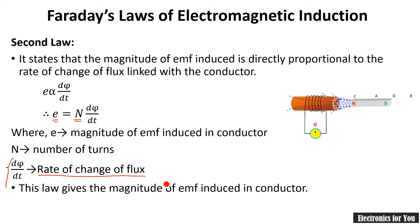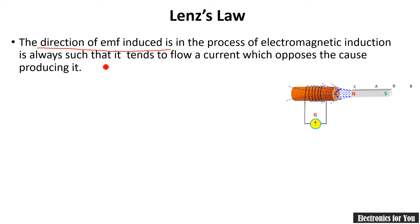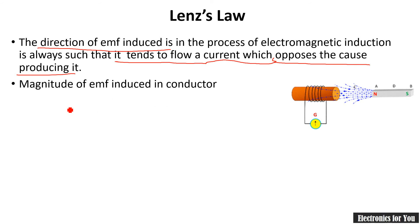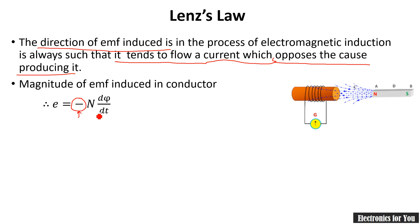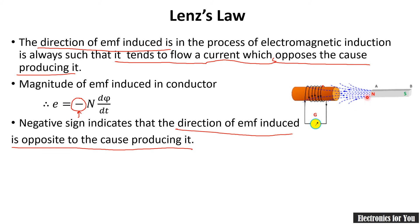Now let us talk about Lenz's law, which gives the direction of EMF induced. It states that the induced EMF is always such that it tends to flow a current which opposes the cause of producing it — whichever the cause of producing it, the induced EMF will always try to oppose it. The magnitude of EMF induced is given by E equals minus N dΦ/dt. The negative sign indicates that the direction of EMF induced is opposite to the cause producing it.